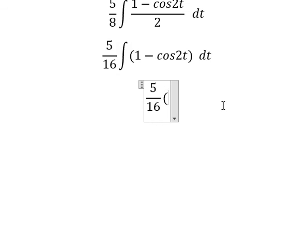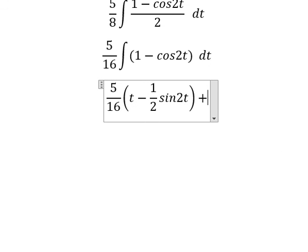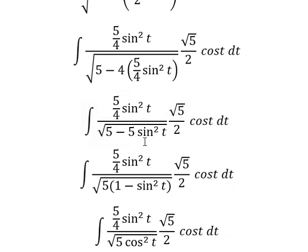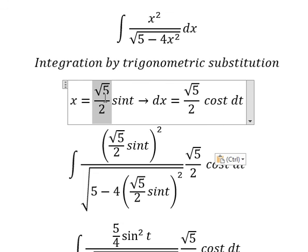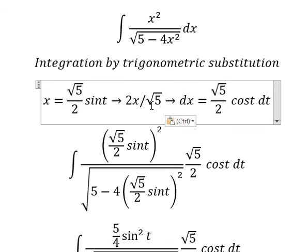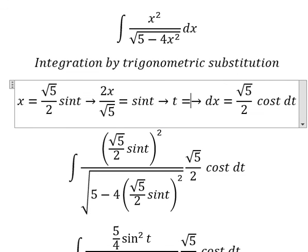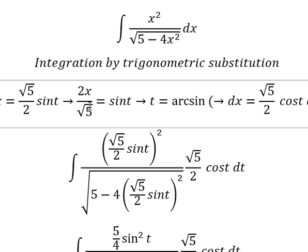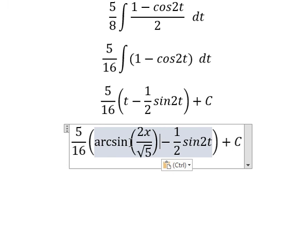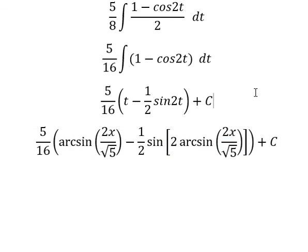Now we have the final answer. The integral of 1 gives t, and this term gives 1 over 2 times sin(2t), plus the constant C. For t, we divide both sides and get t equals arcsin of the expression. I substitute back to replace t, and this is the end. Thank you for watching, see you next time.